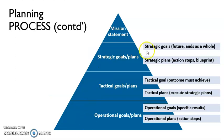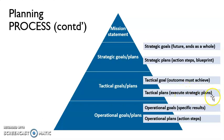Strategic goals and plans are focused on the future and serve as the long-term blueprint for the whole company. Tactical goals are outcome-based plans that must be achieved and executed over a certain period to support the strategic plan. Operational goals and plans are very specific and contain action steps — what to do next — helping individuals work out their plans carefully.